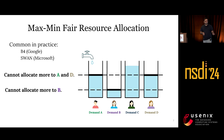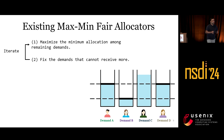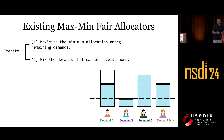This approach naturally translates into an iterative process where, in each iteration, our goal is to find the next set of demands about to hit the bottleneck. In each iteration, we follow two steps: first, finding the bottleneck level by maximizing the minimum allocation to all demands; and second, identifying and fixing the demands that cannot receive beyond that rate.